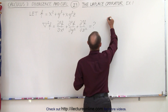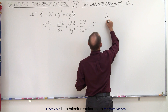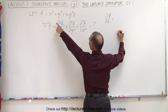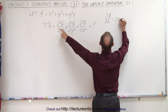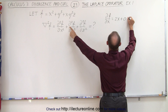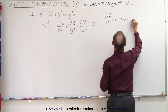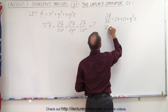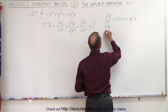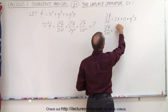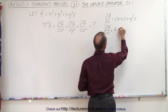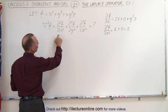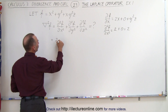Starting with the first derivative, the partial with respect to x of the entire function is equal to: the first term gives 2x, the second term gives 0, and the third term gives y squared z. Then taking the second derivative with respect to x, we get 2, plus 0, which is simply equal to 2. So this first term is equal to 2.